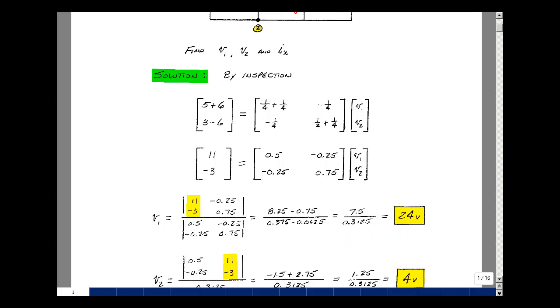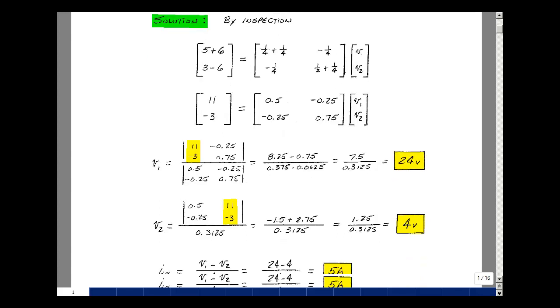To solve for node voltage 2, we'll take the left-hand side of the equation and put it into column 2, and then find that determinant. Half times minus 3 is minus 1 and a half, and then I have a minus this product. Two minus signs cancel, and I get 0.25 times 11, and that's 2.75.